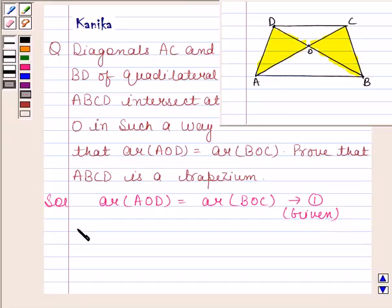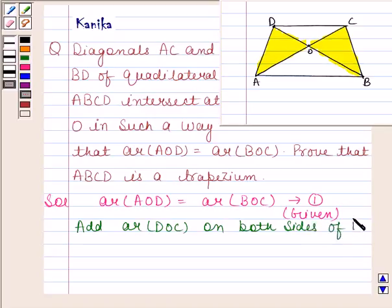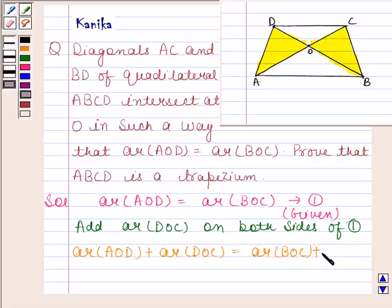Now we will add area of triangle DOC on both sides of equation one. By adding, area of triangle AOD plus area of triangle DOC is equal to area of triangle BOC plus area of triangle DOC.